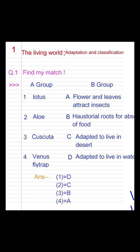Answer: A is equal to D. Lotus is equal to adapted to live in water. Second is equal to C. Aloe is equal to adapted to live in desert. Third is equal to B. Cuscuta is equal to haustorial roots for absorbing food. Fourth is equal to A. Venus Fly Trap is equal to flower and leaves attract insects.